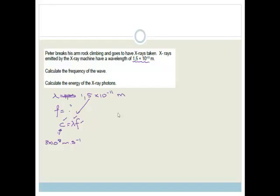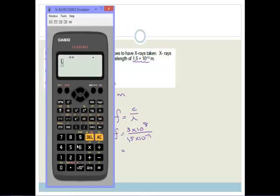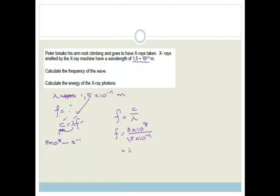If C equals lambda times frequency, then frequency is going to equal C divided by lambda. So the frequency is going to be 3 times by 10 to the power of 8 all over 1.5 times by 10 to the minus 11. So let's pop it in our calculators. So we've got 3 exponent 8 all divided by 1.5 exponent negative 11. And what do we get? We get 2 times by 10 to the 19.